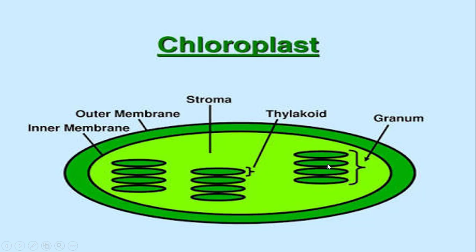In our previous lesson, we studied two types of pigments: accessory pigments and primary pigments. Primary pigments are chlorophyll A and B. Accessory pigments are xanthophyll and carotenoid. These cluster inside the thylakoid to form a photosystem.